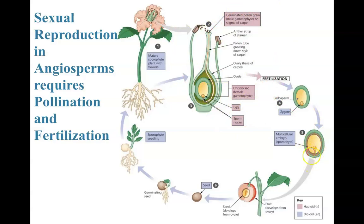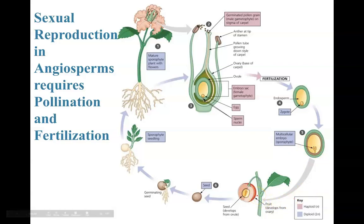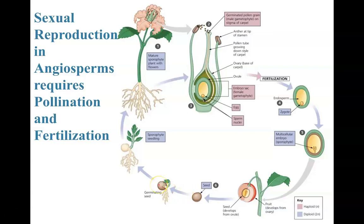The multicellular embryo grows while the endosperm provides nourishment. The fruit develops from the ovary portion, and the seed develops from the ovule housing the growing embryo. The seed is released into the environment as a dormant seed. When conditions are favorable and it's ready to germinate, the sporophyte generation grows. This is a eudicot — two cotyledons forming, branched leaves, taproot formation — and eventually it matures into a flowering plant to continue the life cycle.